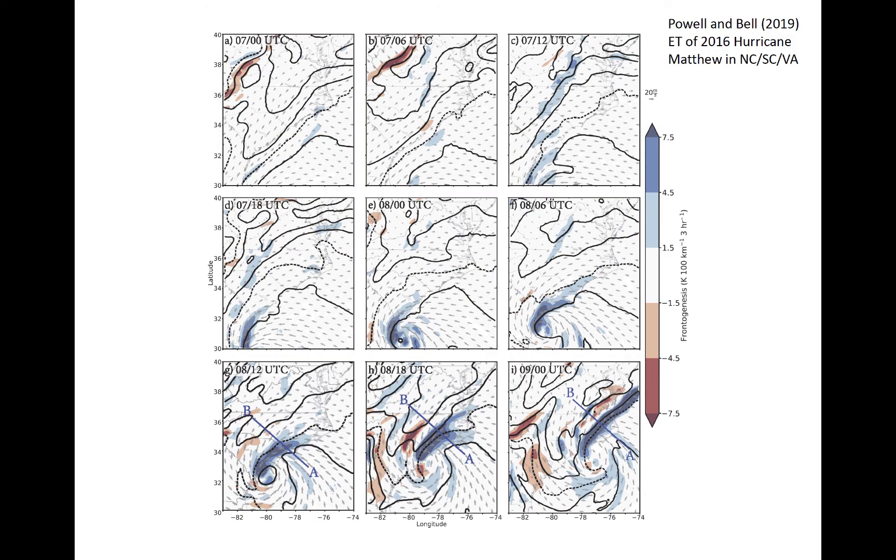An example of a recent extratropical transition of a well-documented Atlantic hurricane is shown here. Hurricane Matthew moved slowly northward along the U.S. southeast coast in October 2016. It resulted in over 400 millimeters of rainfall in some regions and caused catastrophic fresh water flooding along many coastal river basins.